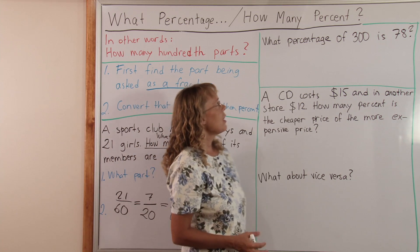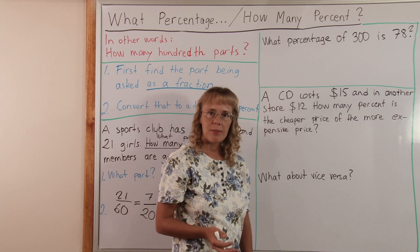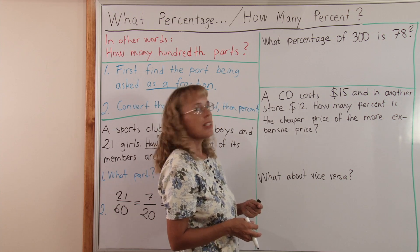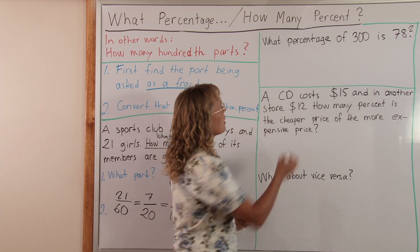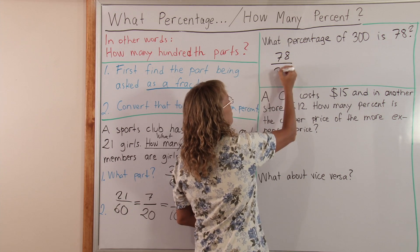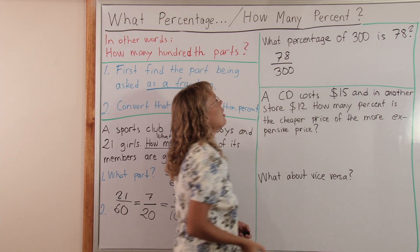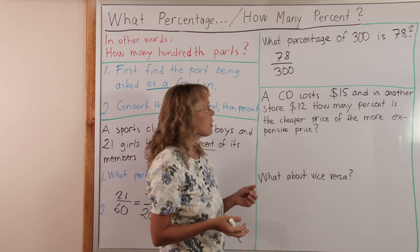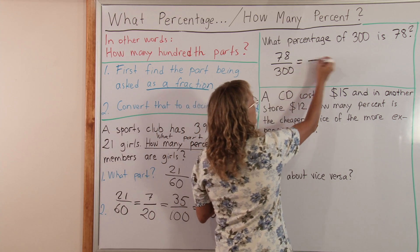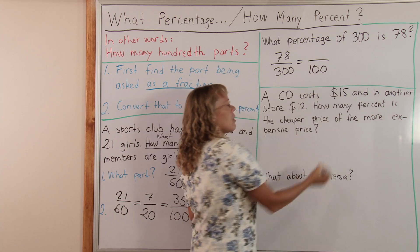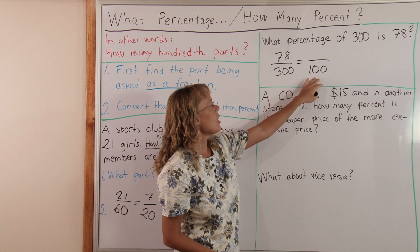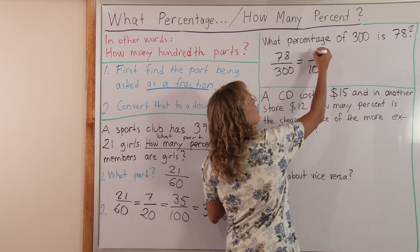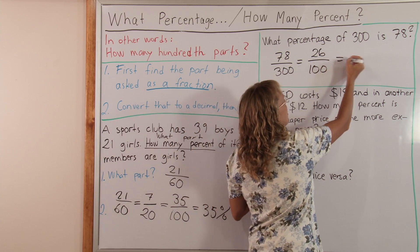Here's another question: What percentage of 300 is 78? First change it to 'what part?' — what part of 300 is 78? Just write the fraction: 78 over 300. Now we change this to a percent. You could use a calculator, or since this one is also easy, change the denominator to 100. 300 divided by 3 gives 100, so divide 78 by 3 to get 26. This is 26 percent.